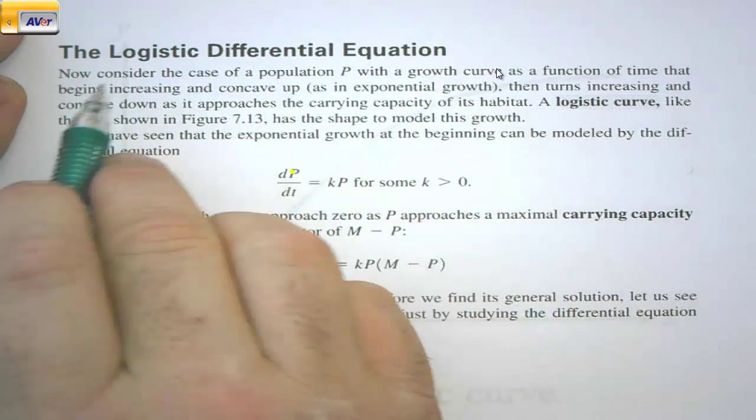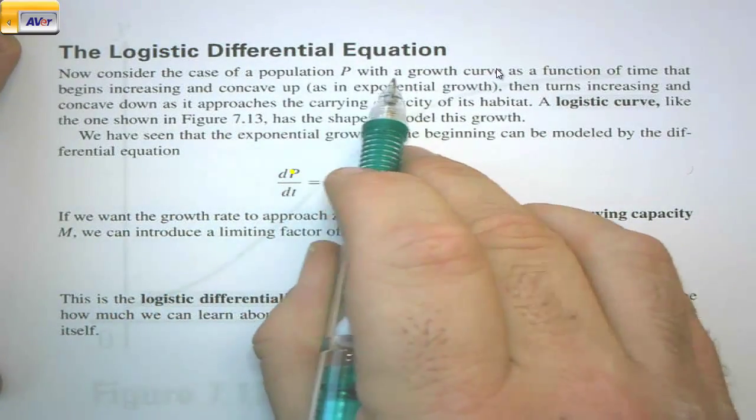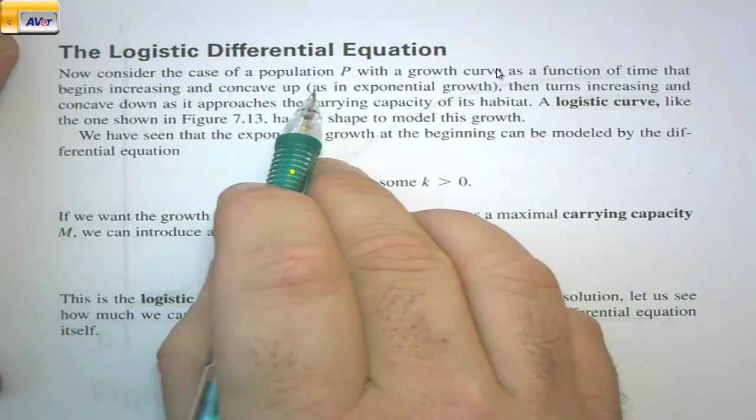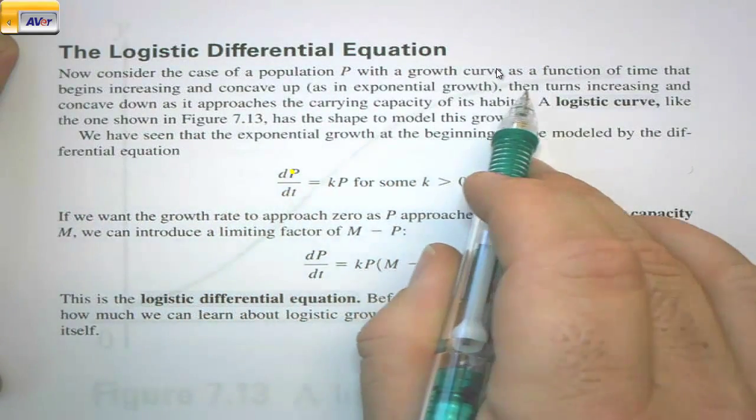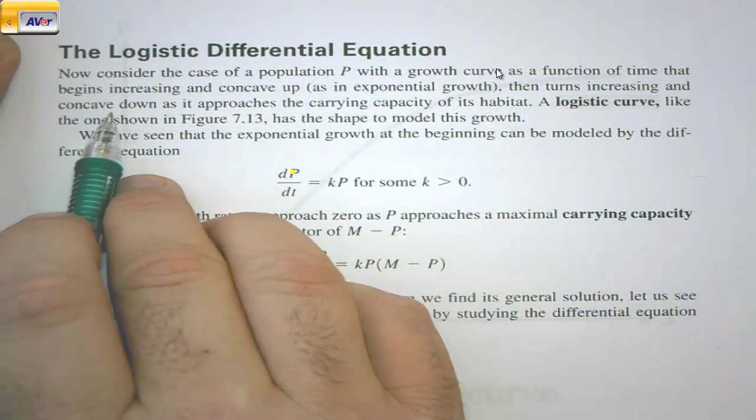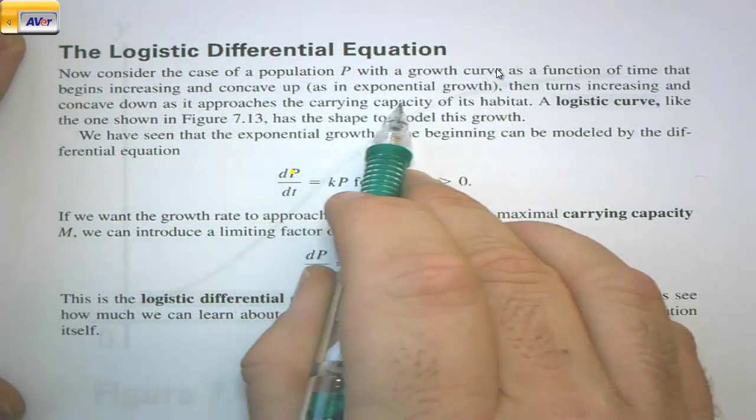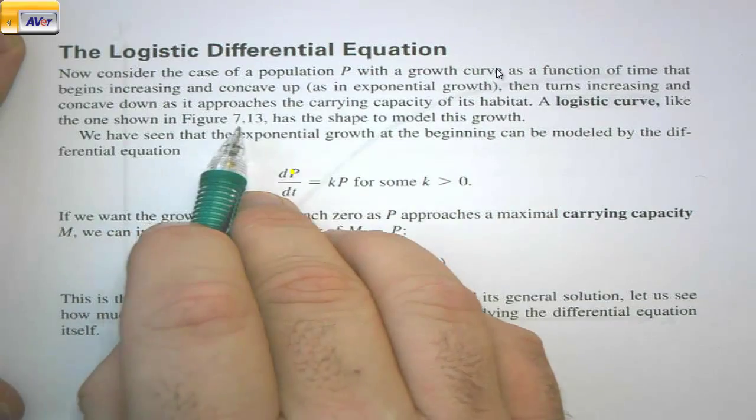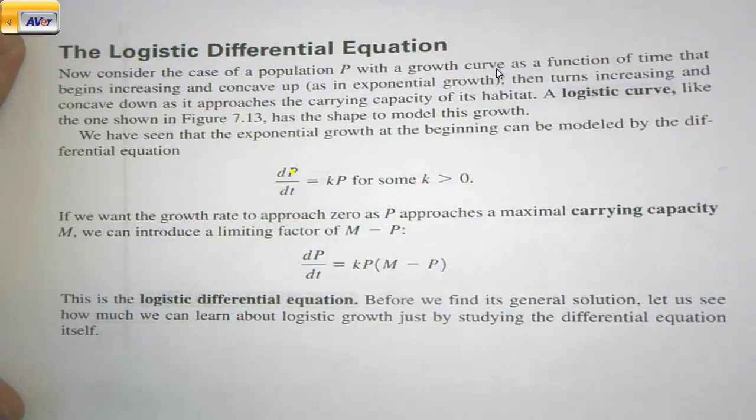Logistic Differential Equation. Now consider the case of a population P with a growth curve as a function of time that begins increasing and concave up as in exponential growth, then turns increasing and concave down as it approaches the carrying capacity of its habitat. A logistic curve like the one shown in figure 7.13 has the shape to model this growth.